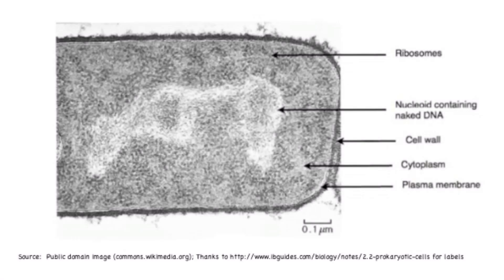Here we will identify structures from electron micrographs. First to be labelled here are the ribosomes, which you can identify as tiny black dots that would be present in the cytoplasm.